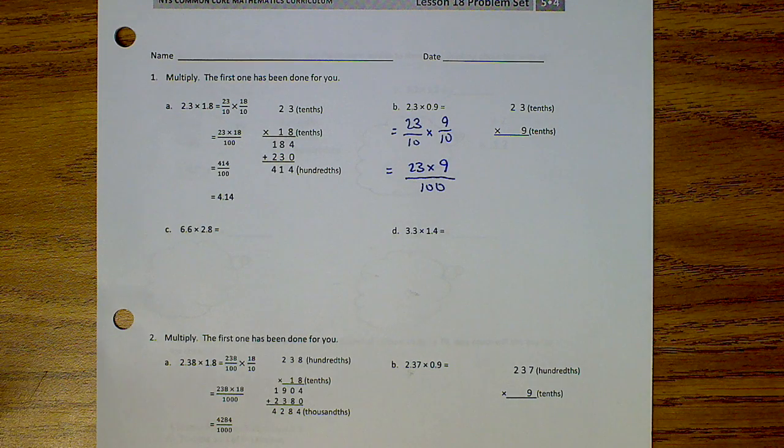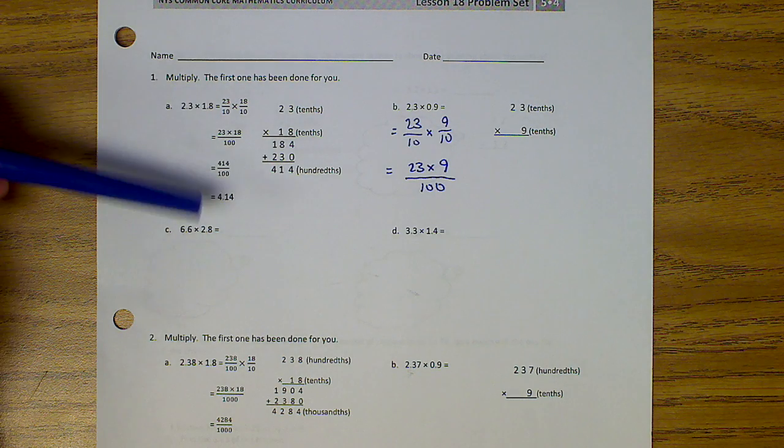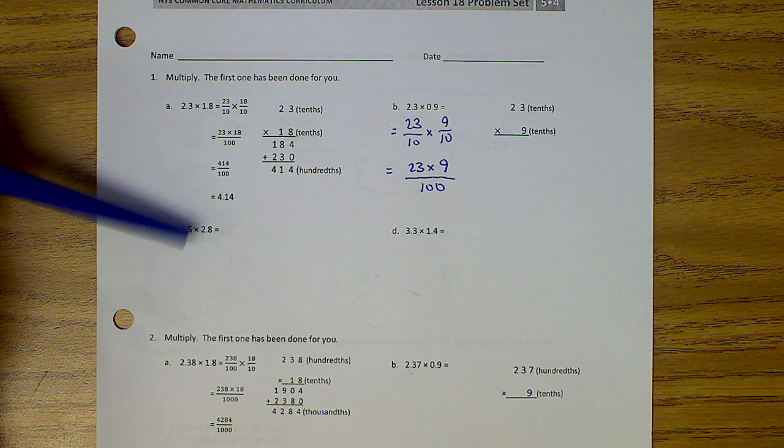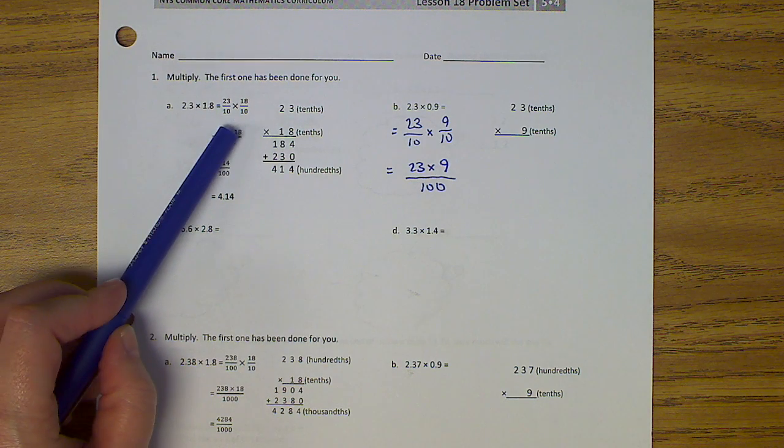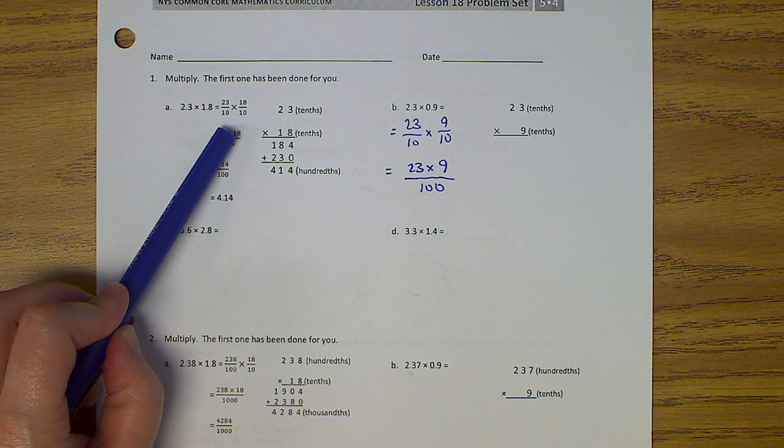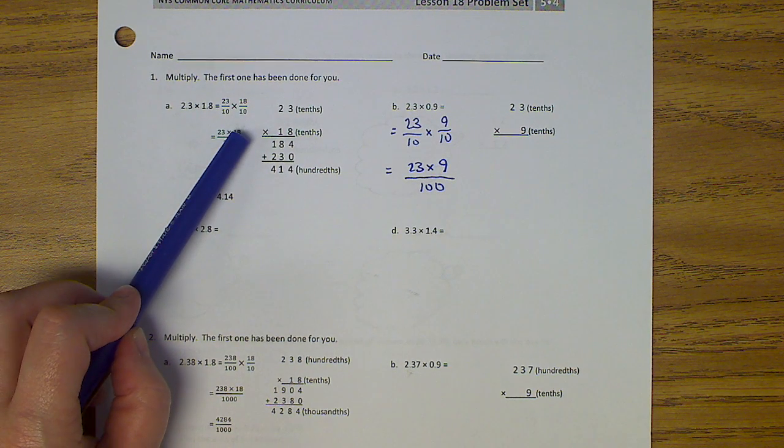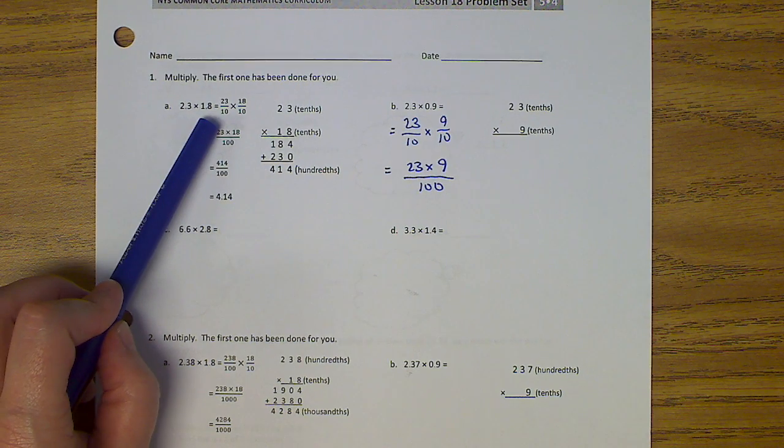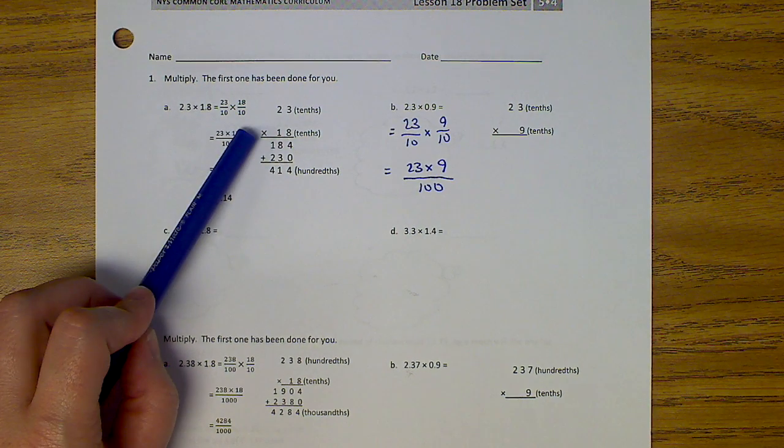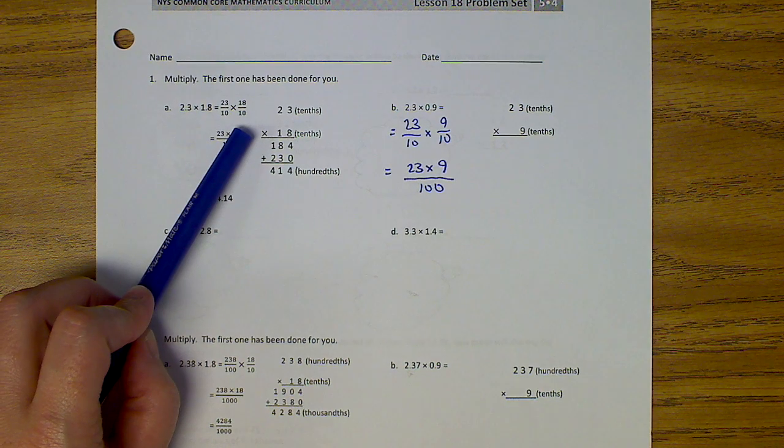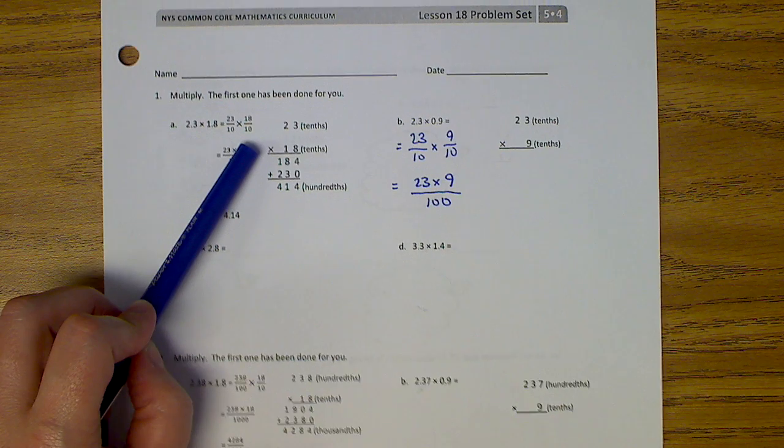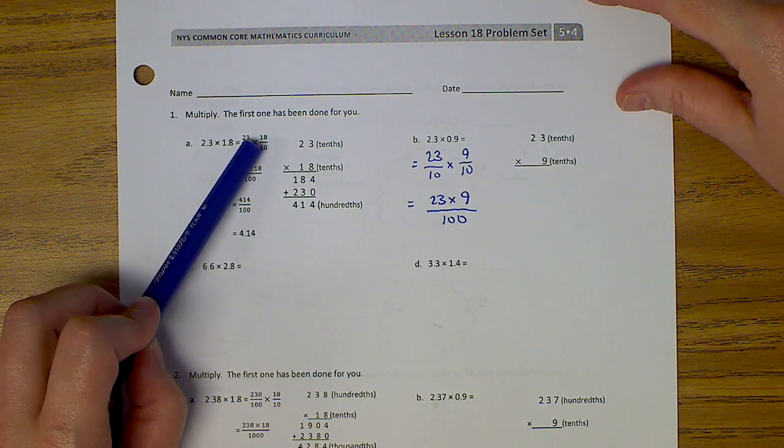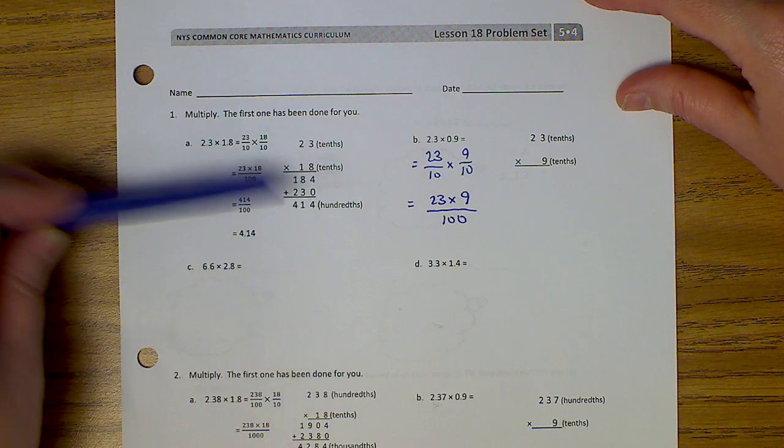Okay, this is lesson 18 problem set. It says multiply, the first one has been done for you. So if you notice, they took 2 and 3 tenths and made it 23 tenths. Because if you remember previous lessons, we talk about that decomposing where you push all the numbers to the last digit.